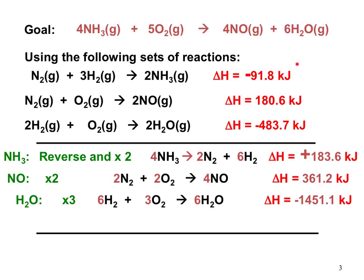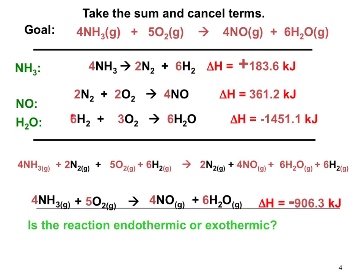Now that we've flipped and multiplied all of the equations to match the target, we perform the summation. We line up all equations, sum all reactants on the left-hand side and all products on the right-hand side, then cancel anything that appears on both sides. Six moles of gaseous H2 gas cancel on both sides, and two moles of N2 gas cancel on both sides. This leaves us with the equation below, which matches the overall equation they want us to solve for.